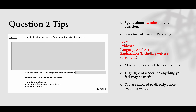Question two is something slightly different. This one, you are looking at language and how the writer is using language to describe something. Again, they've given you the lines — in this question they're telling you from lines five to fifteen of the extract, so please make sure you highlight that section. Spend about 12 minutes on this question. If your timing is good and you work through past paper questions and know the structure, you should be able to finish this in 12 minutes.